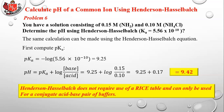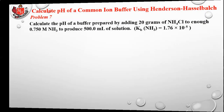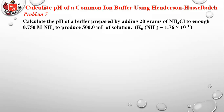Henderson-Hasselbalch does not require a RICE table and can only be used for a conjugate acid-base buffer pair. New problem — this one looks more challenging but step back and think. You have NH₃ and ammonium chloride (NH₄Cl), which breaks apart to give NH₄⁺. NH₃ is the conjugate base and NH₄⁺ is the conjugate weak acid, so yes, this is a buffer and Henderson-Hasselbalch applies.